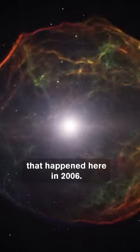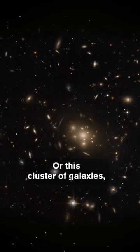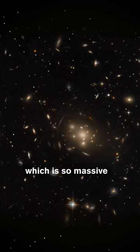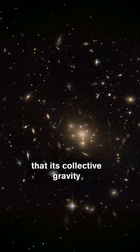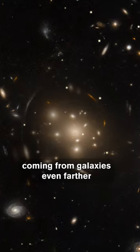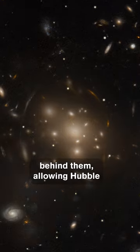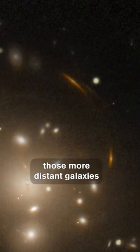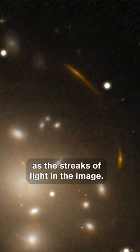Or this cluster of galaxies, which is so massive that its collective gravity is actually bending light coming from galaxies even farther behind them, allowing Hubble to observe those more distant galaxies as the streaks of light in the image.